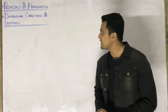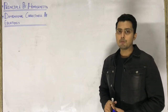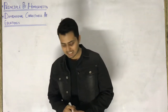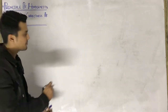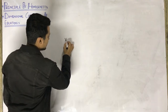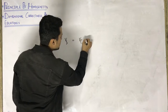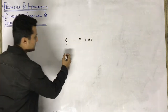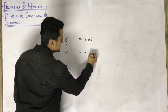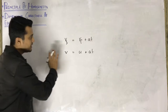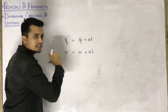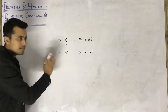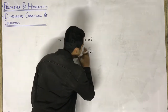Let's start with the principle of homogeneity. Before writing the definition, let me give you the concept. Consider the equation: vf = vi + at, which is the first equation of motion. Sometimes it is also written as v = u + at. Here vf and v stand for final velocity, vi and u for initial velocity, a for acceleration, and t for time.